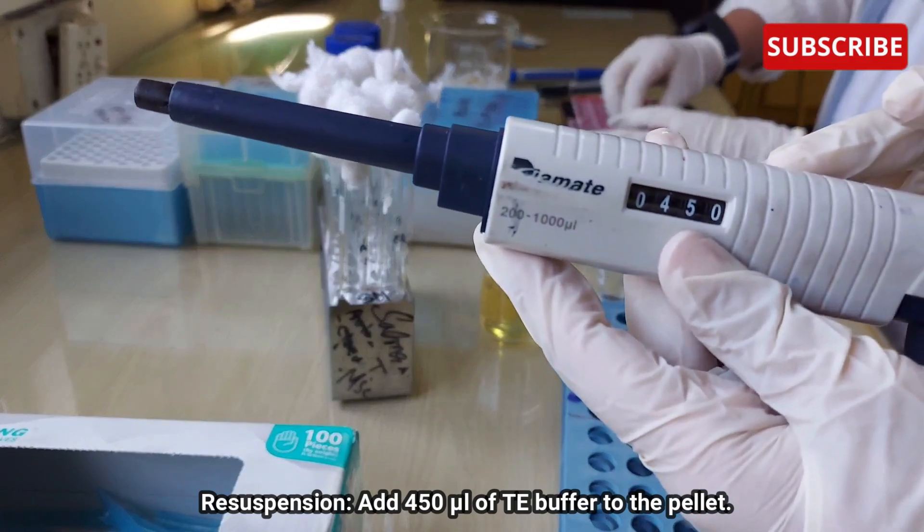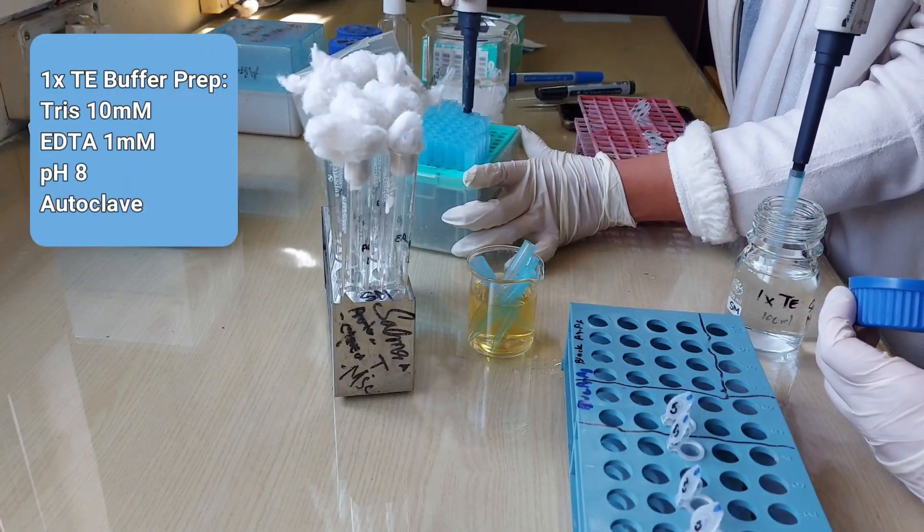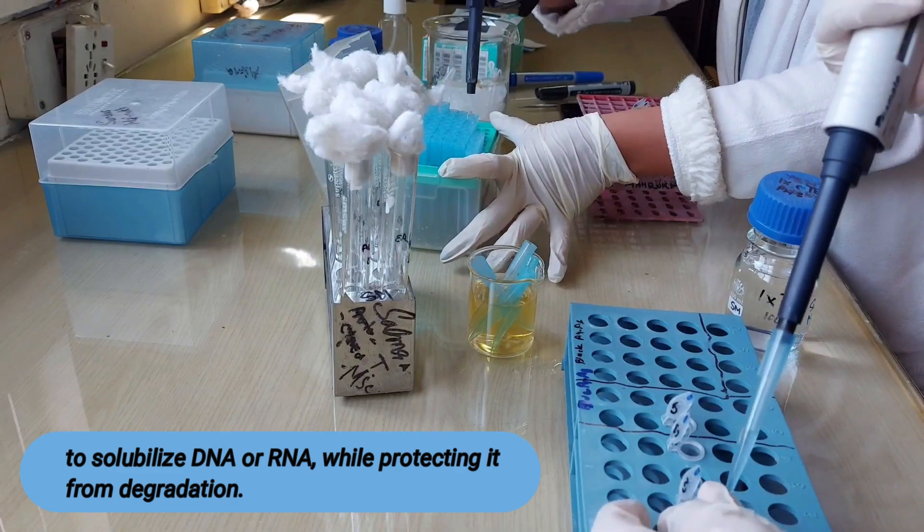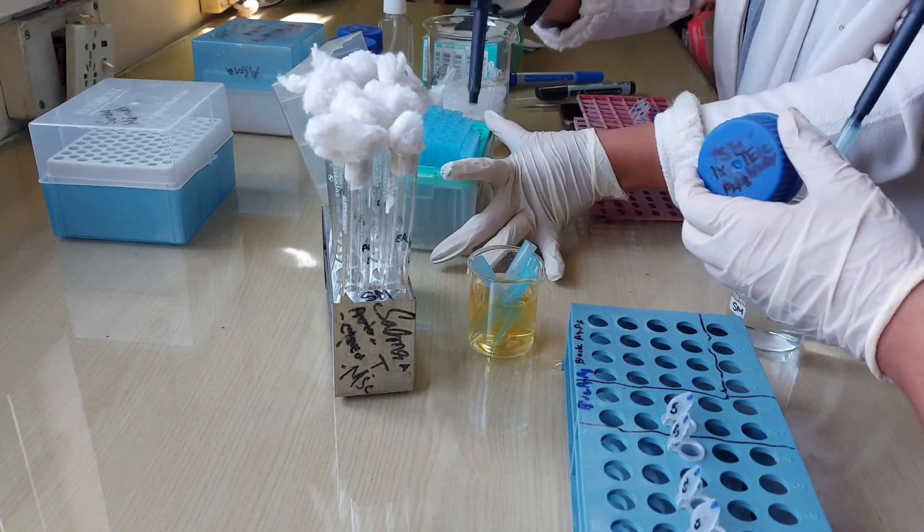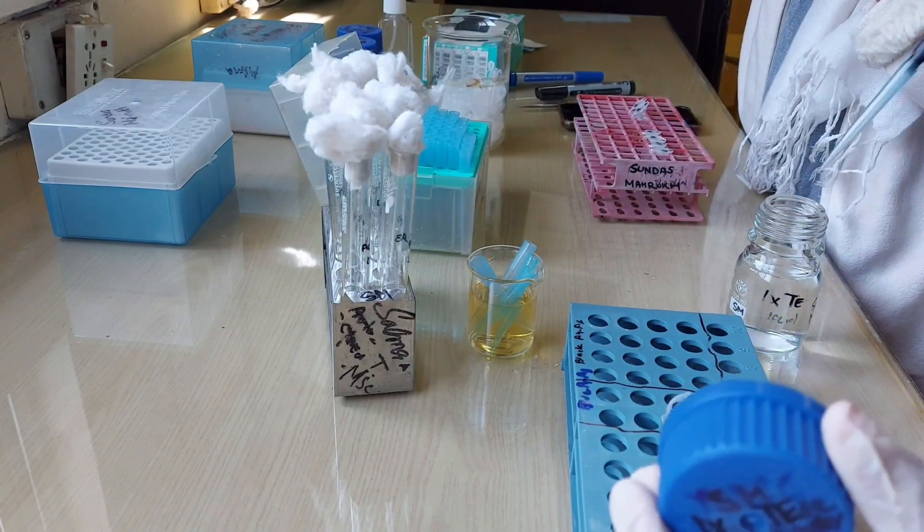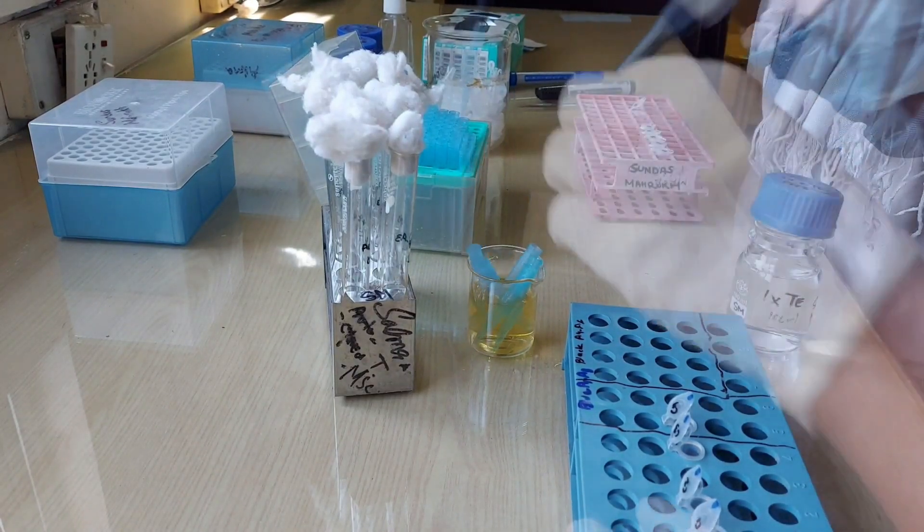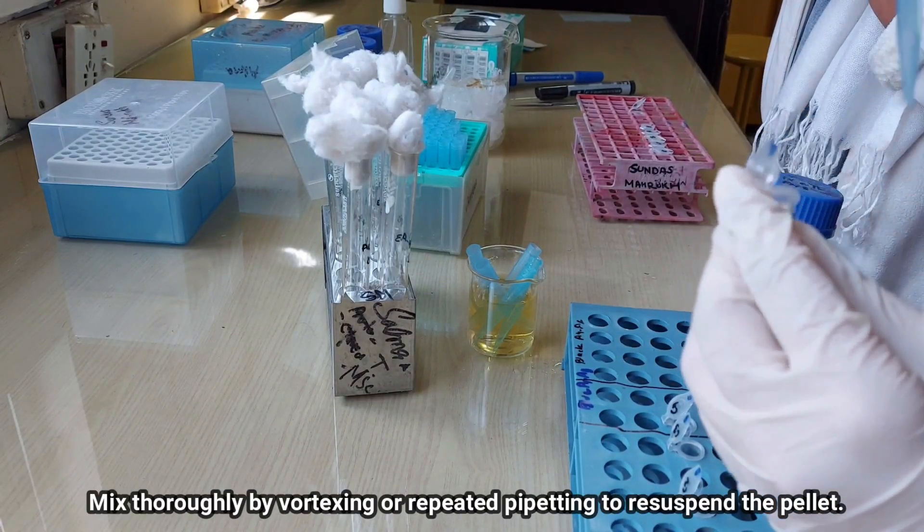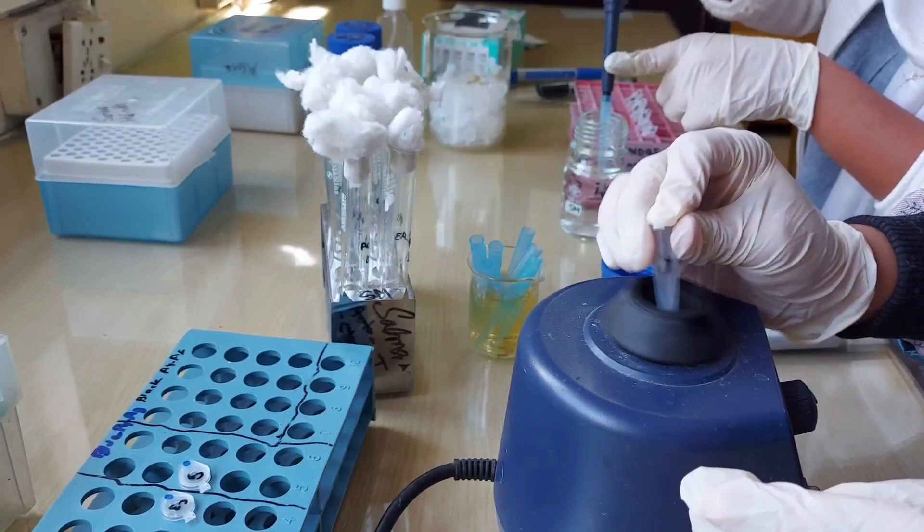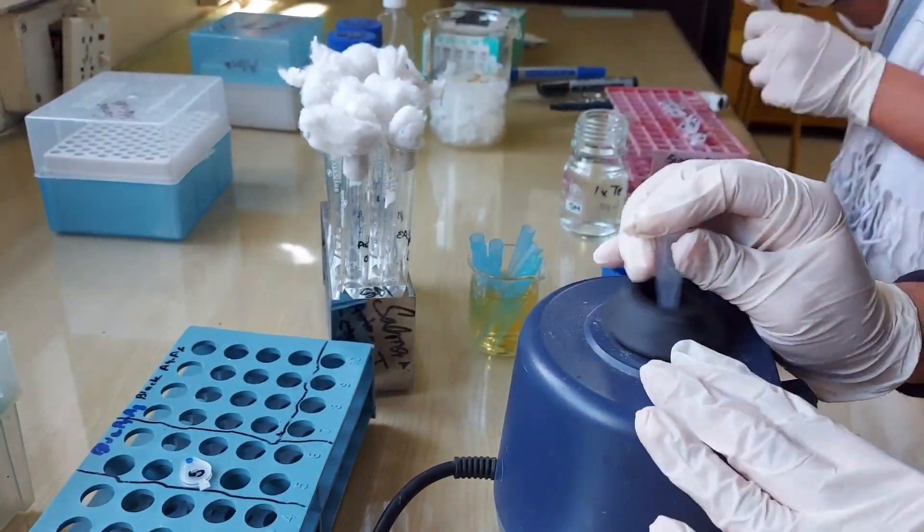Now set the micropipette to 450 microlitre and add the 1X TE buffer into each of the eppendorfs. The purpose of the TE buffer is to solubilize DNA or RNA while protecting it from degradation. Now with the help of micropipette, mix cell pellet and 1X TE buffer by repeated pipetting and for better results, use vortex as well. Do this procedure to the rest of the samples as well.